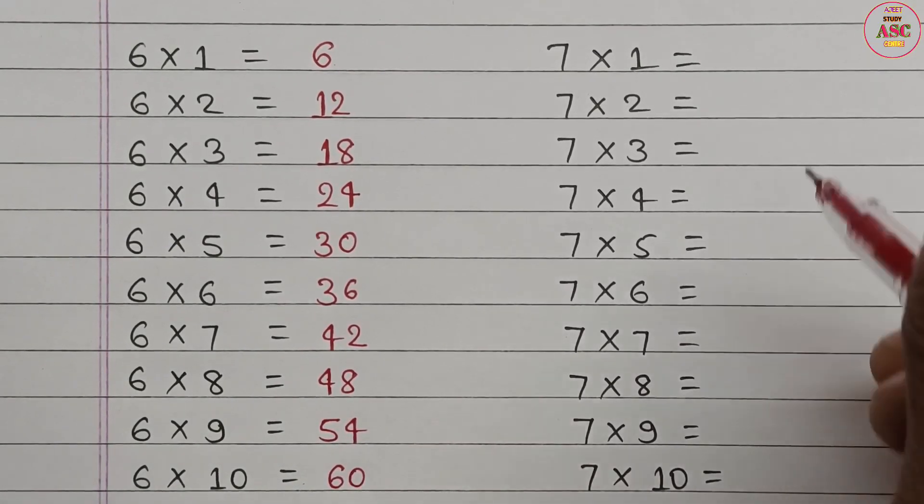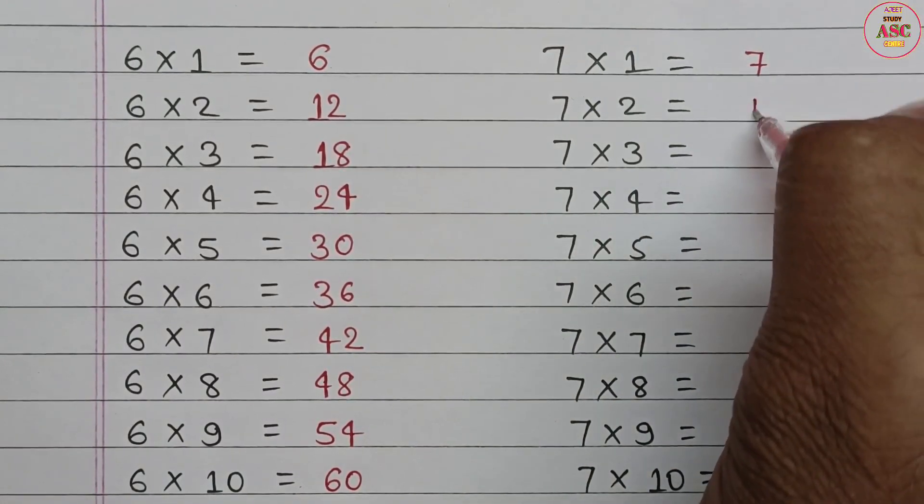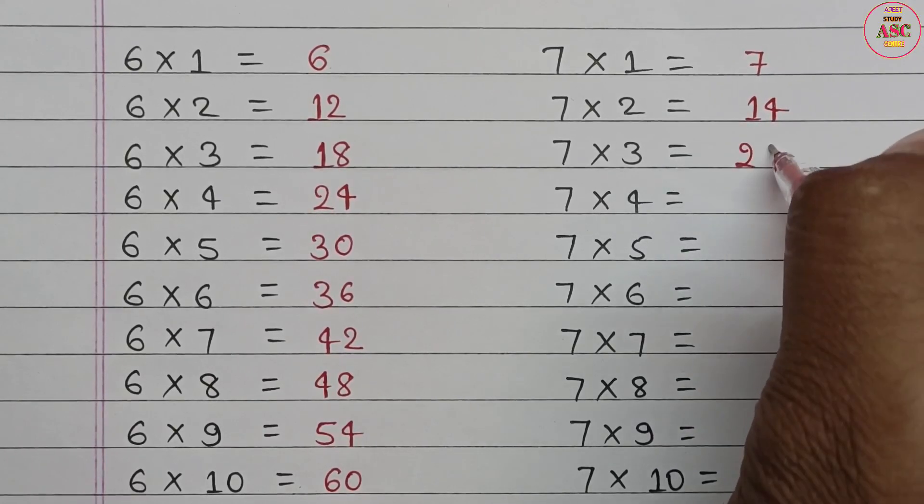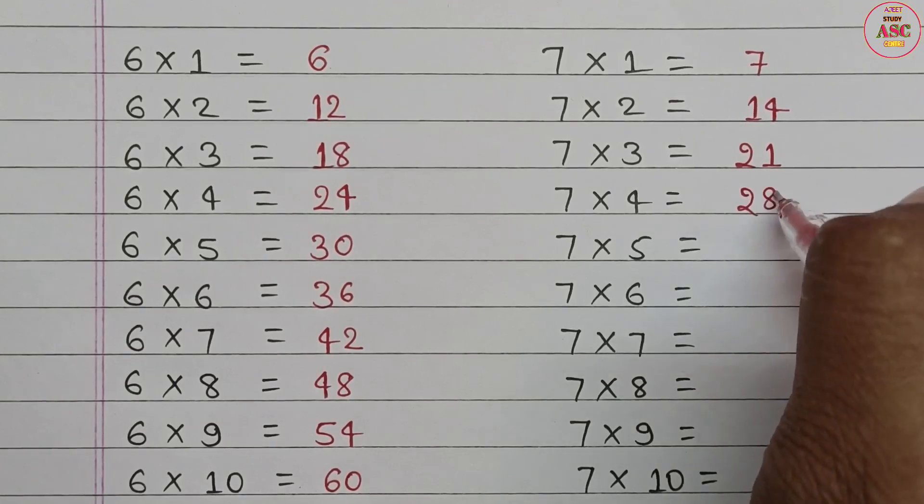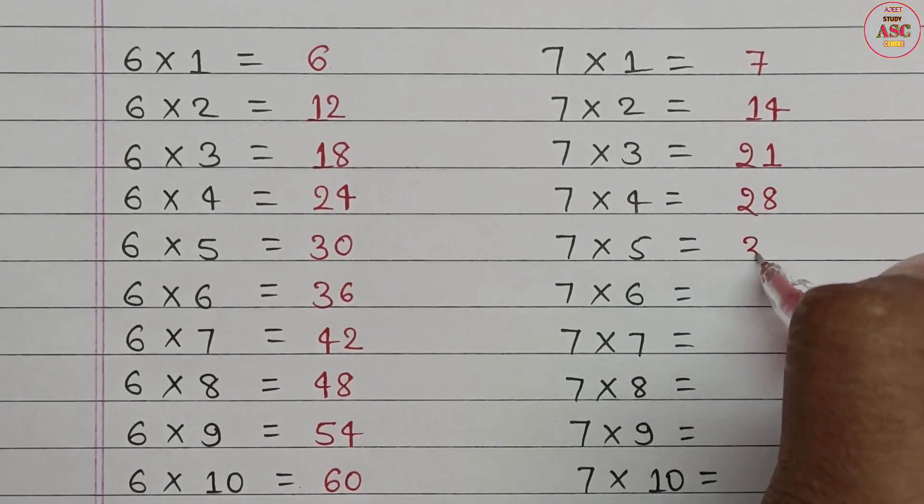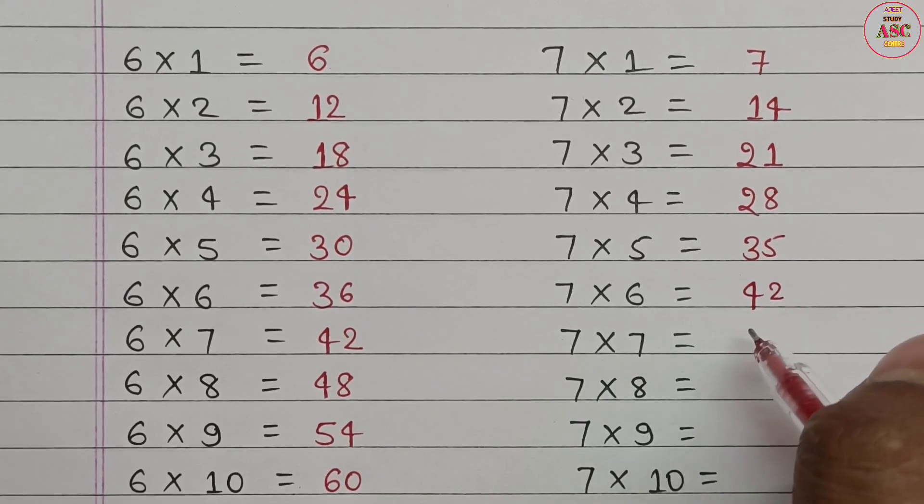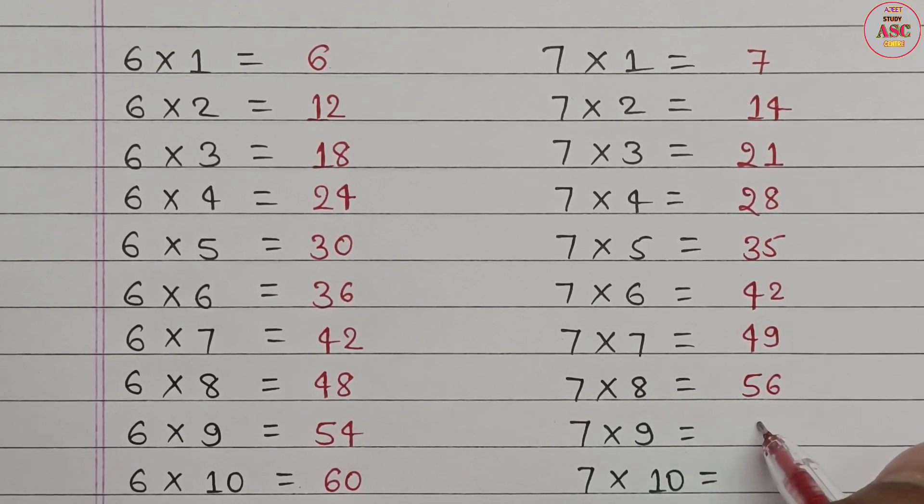7 times 1 equals 7. 7 times 2 equals 14. 7 times 3 equals 21. 7 times 4 equals 28. 7 times 5 equals 35. 7 times 6 equals 42. 7 times 7 equals 49. 7 times 8 equals 56. 7 times 9 equals 63. 7 times 10 equals 70.